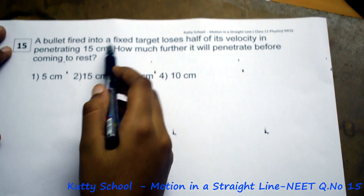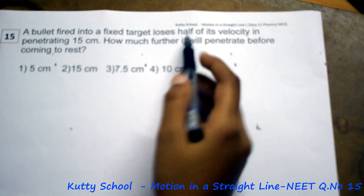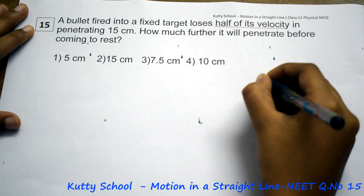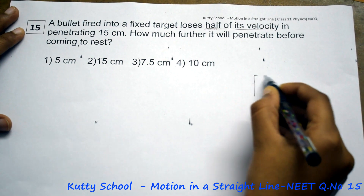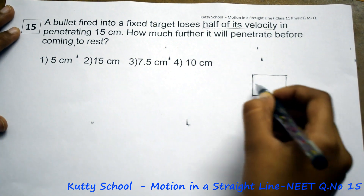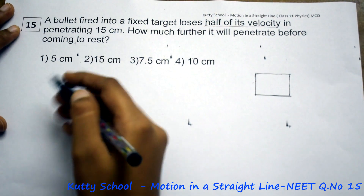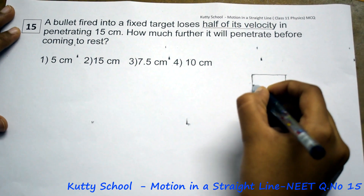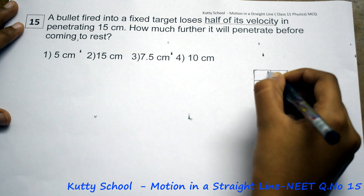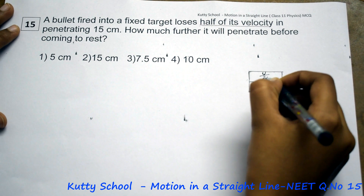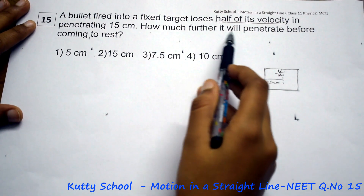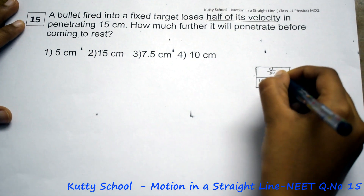A bullet fired into a fixed target loses half of its velocity in penetrating 15 centimetres. We need to find how much further it will penetrate before coming to rest. So, in penetrating 15 centimetres, the bullet's velocity reduces to u by 2 — half of its initial velocity. That is how much further it will penetrate.